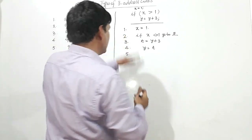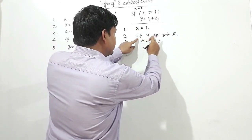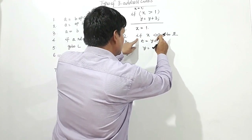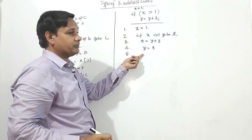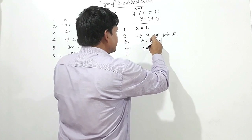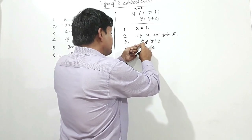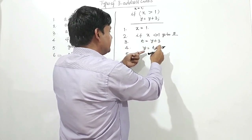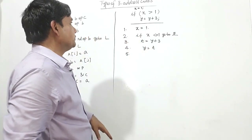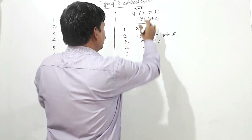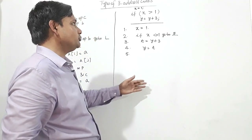Let me walk through the program again. If X is less than or equal to 1, the program is terminated. If the value of X is greater than 1, control shifts to line 3 where T is assigned Y plus 3, and then value of T is copied into Y. So this is the three address code for that segment: X equal to 1, if X greater than 1, Y equal to Y plus 3.